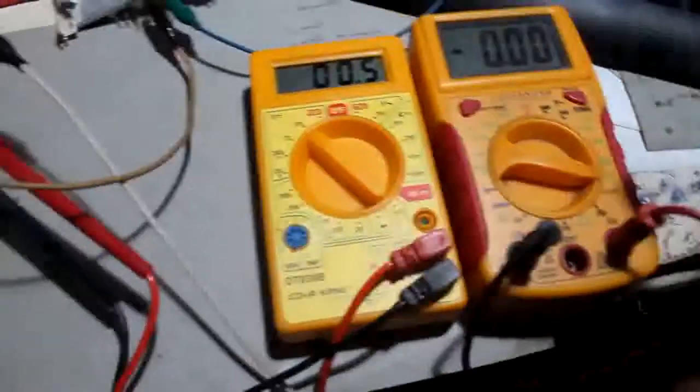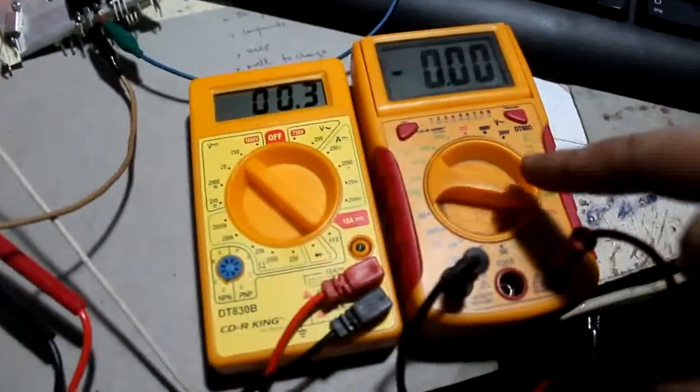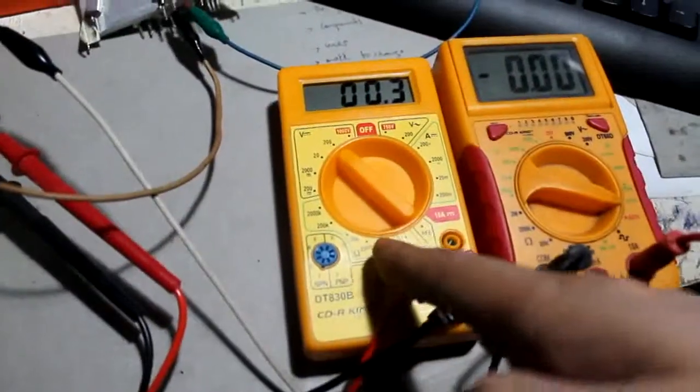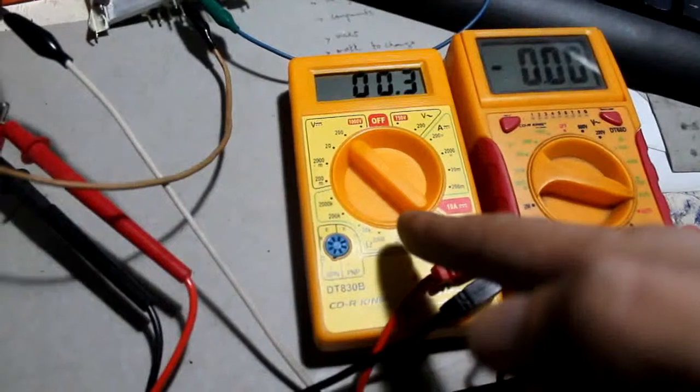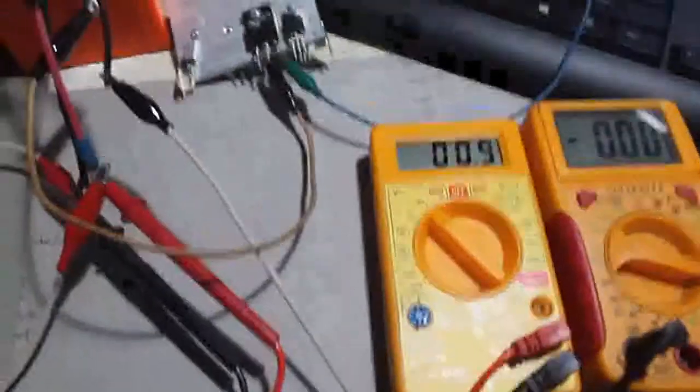So this tester is connected to test the amperage set to 10 amps maximum and this one is set to test the voltage of our circuit. So what do we have here?